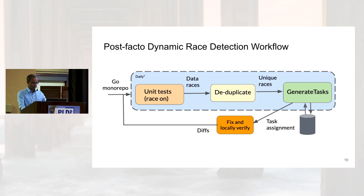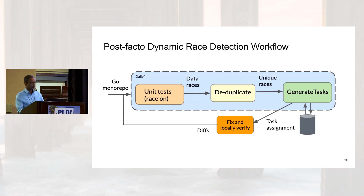Here is our workflow: every day on the monorepo, we compile the entire codebase with race instrumentation enabled, exercise all unit tests, and record whatever races are reported. We deduplicate them. If it is a unique new bug, we generate tasks and file it into our database, and developers independently fix and verify them.